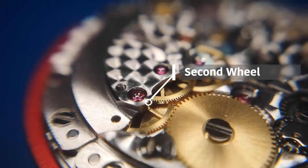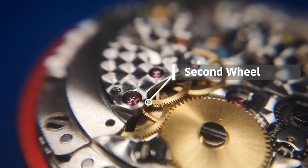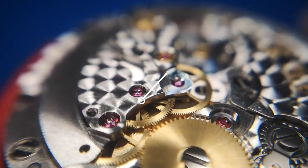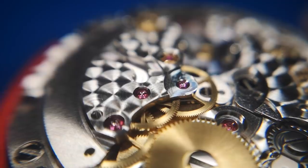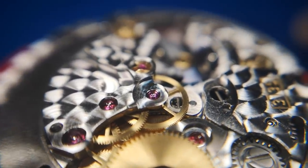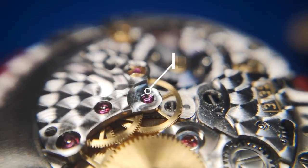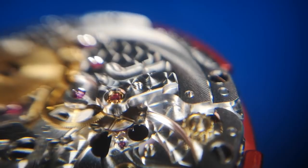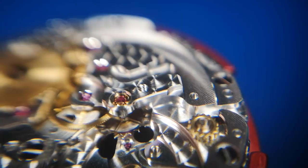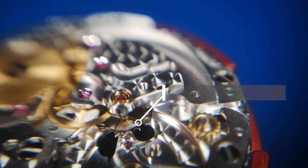That is the first wheel to take up the power from the mainspring barrel. Then we've got the third wheel in the middle of the frame there, and then on to the fourth wheel. And finally we come to the escape wheel.